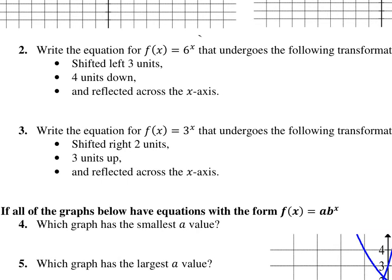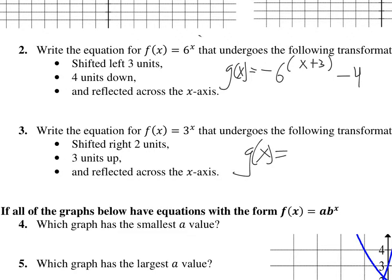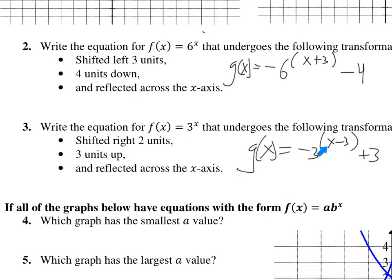Number two: we're going to shift this here. We're going to shift it left three. So we've got g of x. Equals — left is going to be inside the exponent here. So that's going to be x plus three, because it's opposite from what we'd expect. It's going to go down four, so that's going to be minus four out front. And it's going to reflect across the x-axis, so that's a vertical flip — so that's a negative out here. For this other one, the shift goes right, so it's going to be x minus three. It's going to go three units up, so we're going to add three out here and reflect across the x-axis. By the way, if we reflect across the y-axis, we'd want to put a negative in front of that x.